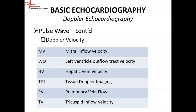Tricuspid inflow is similar to your mitral inflow. Blood enters the right atrium via the inferior and superior vena cava, then flows from the right atrium across the tricuspid valve into the right ventricle. We can measure that blood flow using pulse wave Doppler.